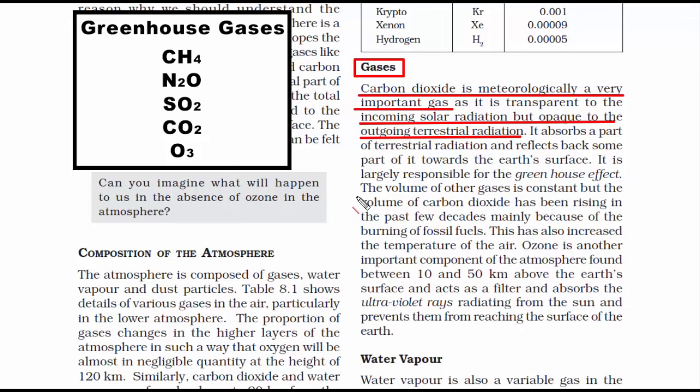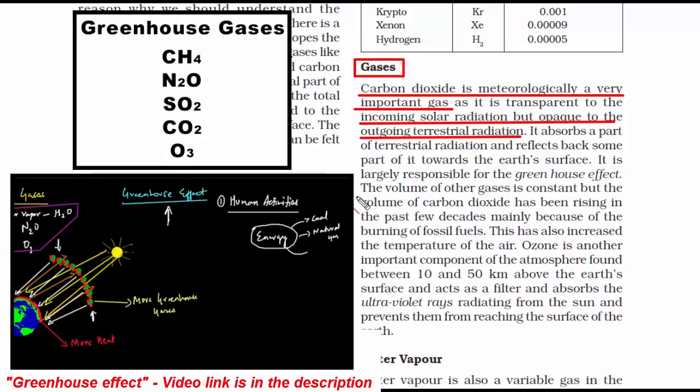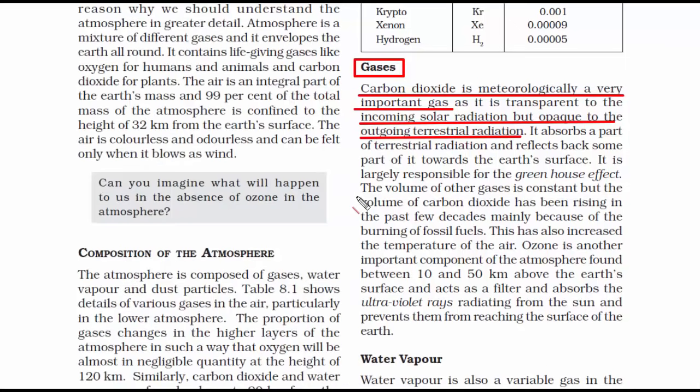So these are a bunch of gases in the atmosphere that blocks the earth's radiation from going out into space. Now these greenhouse gases trap the heat within the earth's atmosphere and makes the earth warmer.